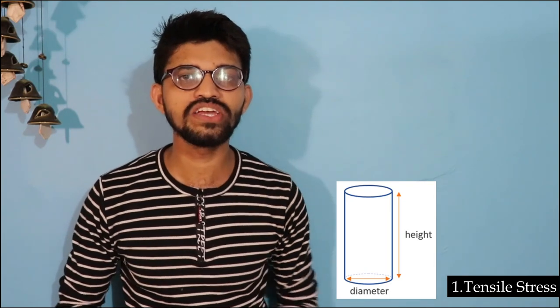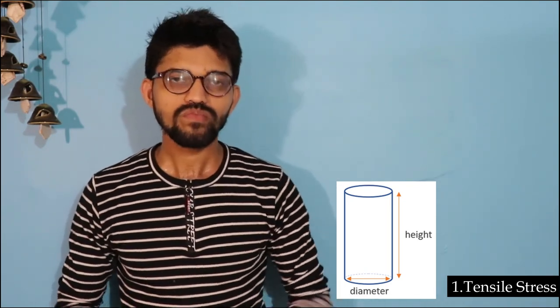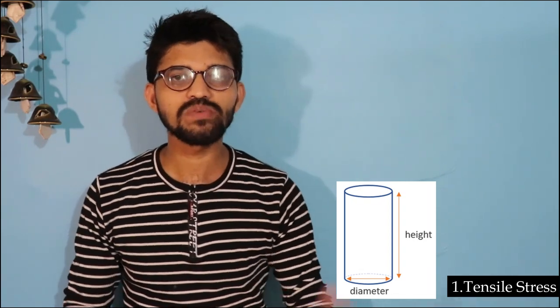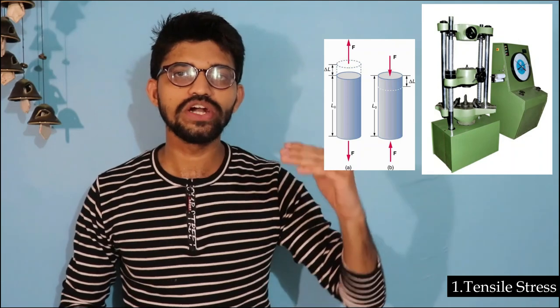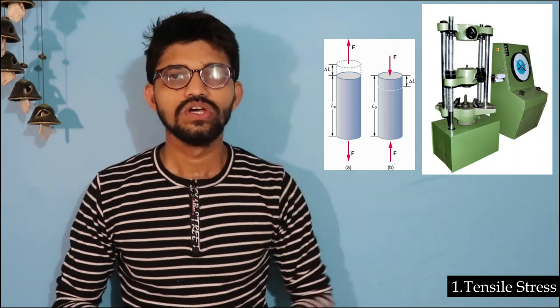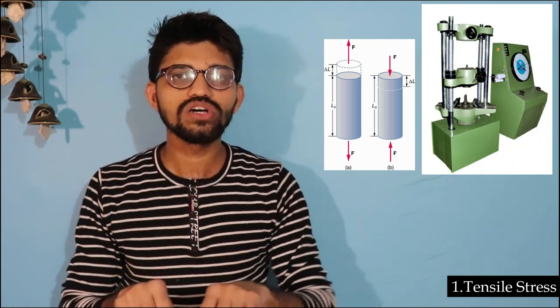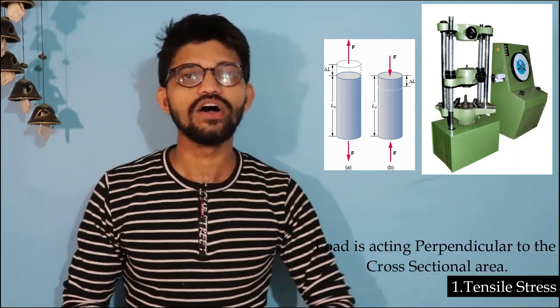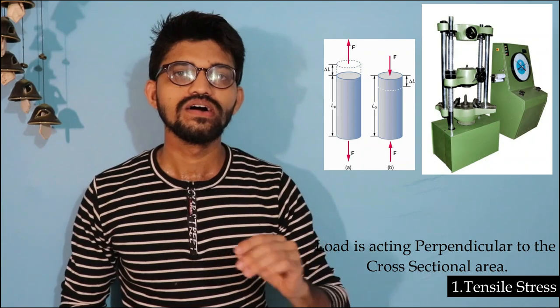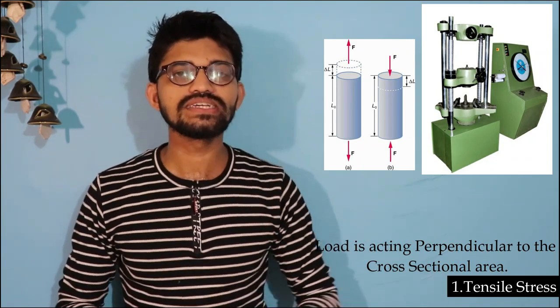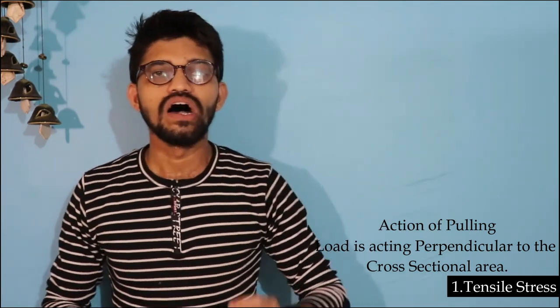The first type is tensile stress. To understand this, let's take an example: suppose I have a cylindrical specimen with a certain diameter D and length L. As I explained in my previous video on the stress-strain curve, that specimen is held in a UTM (Ultimate Testing Machine) and a pulling action is applied on both sides, stretching the specimen. The load is acting perpendicular to the cross-sectional area.